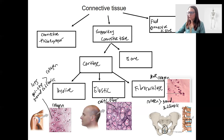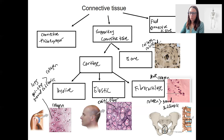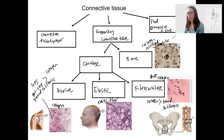Lastly, we've got bone. Bone has a very small amount of ground substance and a lot more collagen, as well as a calcified matrix. I'm going to have another video on the histology of it, but this calcified matrix is going to make bone strong like concrete — shatter resistant, but still flexible because there's still a collagen fiber matrix.